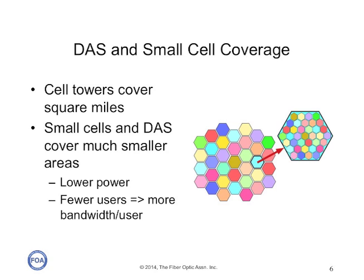Typical cell towers outdoors cover large areas, but small cells and distributed antenna systems cover much smaller areas, which means the antennas are lower power and serve fewer users. Serving fewer users means there's more bandwidth available for each user, which works much better for those users using data and video services over their mobile devices.